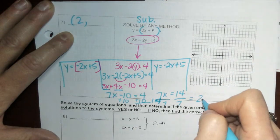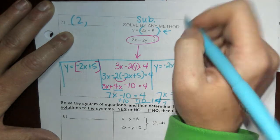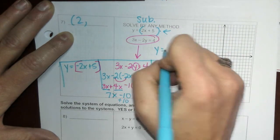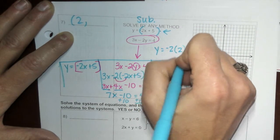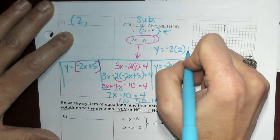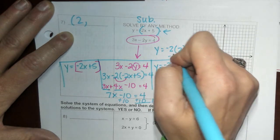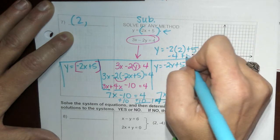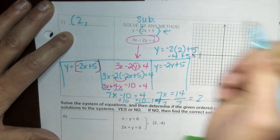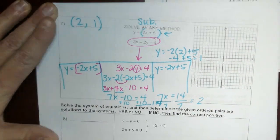So now that I have x, I'm just going to substitute it right back into this top equation. And you get y equals negative 2 times 2, which is x, plus 5. Negative 2 times 2 is negative 4 plus 5 is 1. Your y is 1, so the answer is (2, 1).